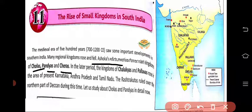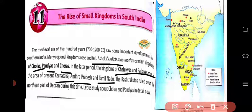From Ashoka's time, whatever written records we find, we get information about these kingdoms. In the later period came the kingdoms of Chalukyas and Pallavas — about them you have already studied in 6th class. They were spread in the areas of present-day Karnataka, Andhra Pradesh, and Tamil Nadu.